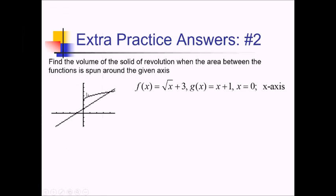In order to do that, I need limits of integration. Clearly, we're starting at zero because they told us we have the vertical line x equals zero as one of our boundaries. But how about this intersection up here? It looks like 4 for the x value. We can find where f of x and g of x intersect on the calculator, but let me just plug in 4 and see. The square root of 4 is 2, plus 3 is 5. And over here, 4 plus 1 is 5. So yeah, they do intersect at 4.